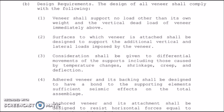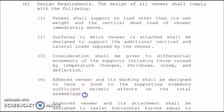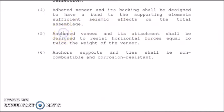Surfaces to which veneer is attached shall be designed to support the additional vertical and lateral loads imposed by the veneer. Consideration shall be given to the differential movements of the supports, including those caused by temperature changes, shrinkage, creep, and deflection. Adhered veneer and its backing shall be designed to have a bond to the supporting element sufficient for seismic effects on the total assemblage. Anchored veneer and its attachment shall be designed to resist horizontal forces equal to twice the weight of the veneer. Anchor supports and ties shall be non-combustible and corrosion resistant.